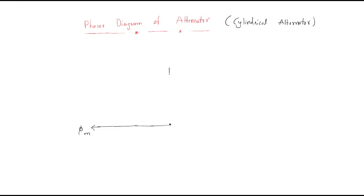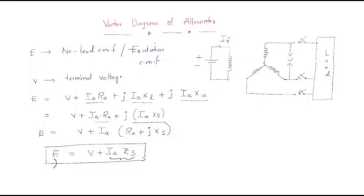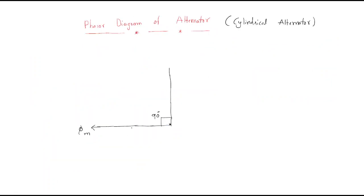After 90 degrees, the open circuit voltage will be generated. But we don't know the magnitude yet because the open circuit voltage depends on the terminal voltage and the voltage drop across ia·Zs.